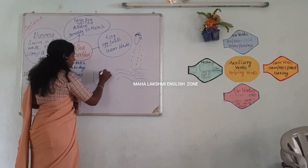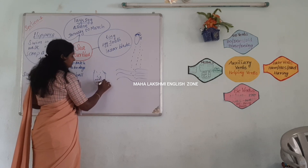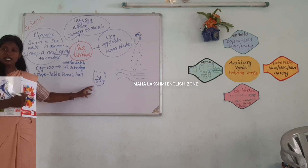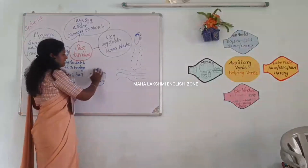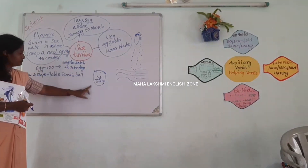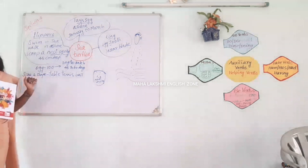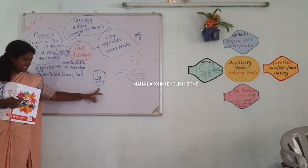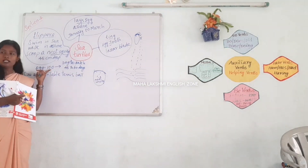The nest cavity is dug deep — the sea turtle digs out the sand to make it. The depth of this nest cavity is 45 centimeters. In one nest cavity, one sea turtle will lay 100 eggs.